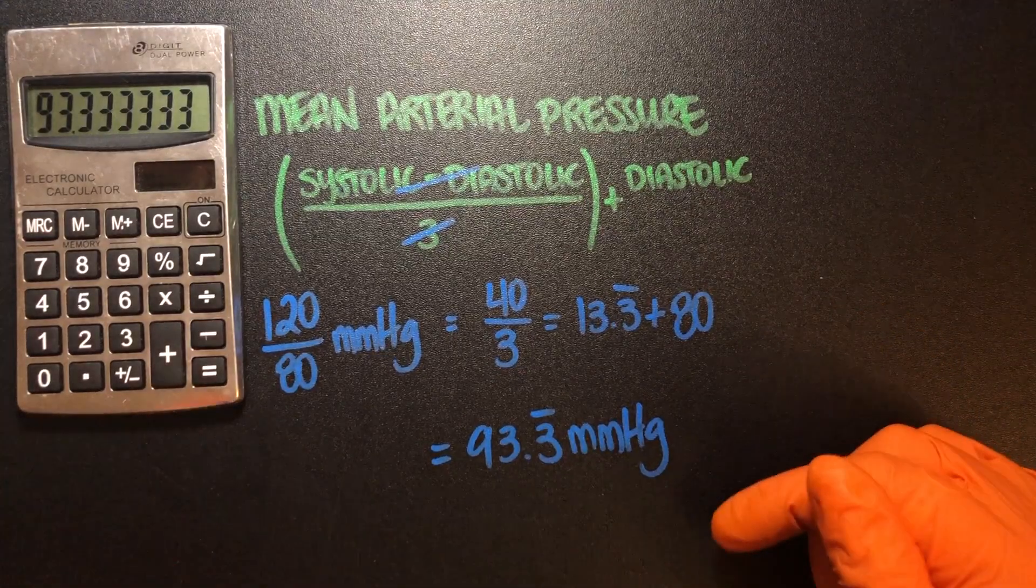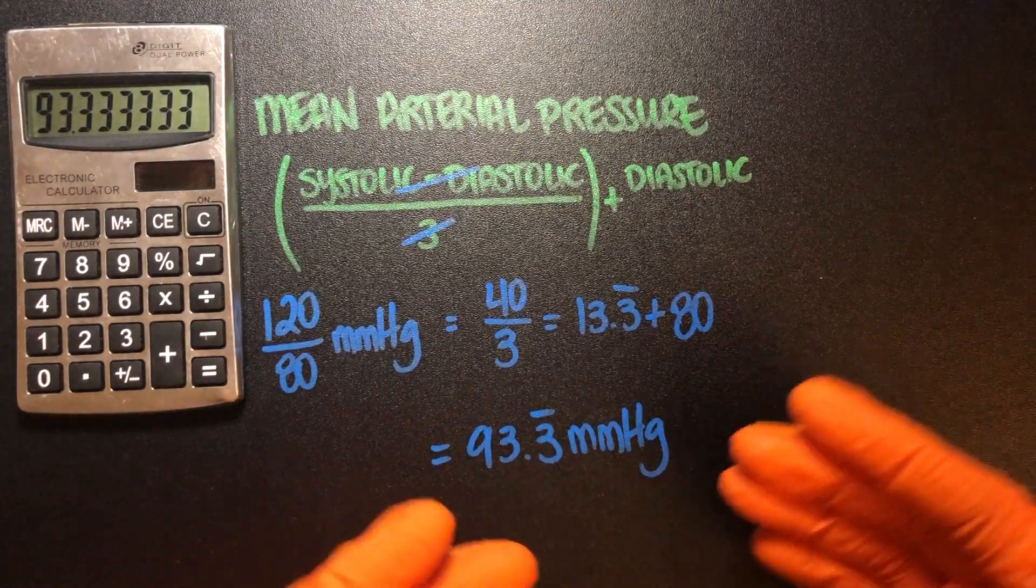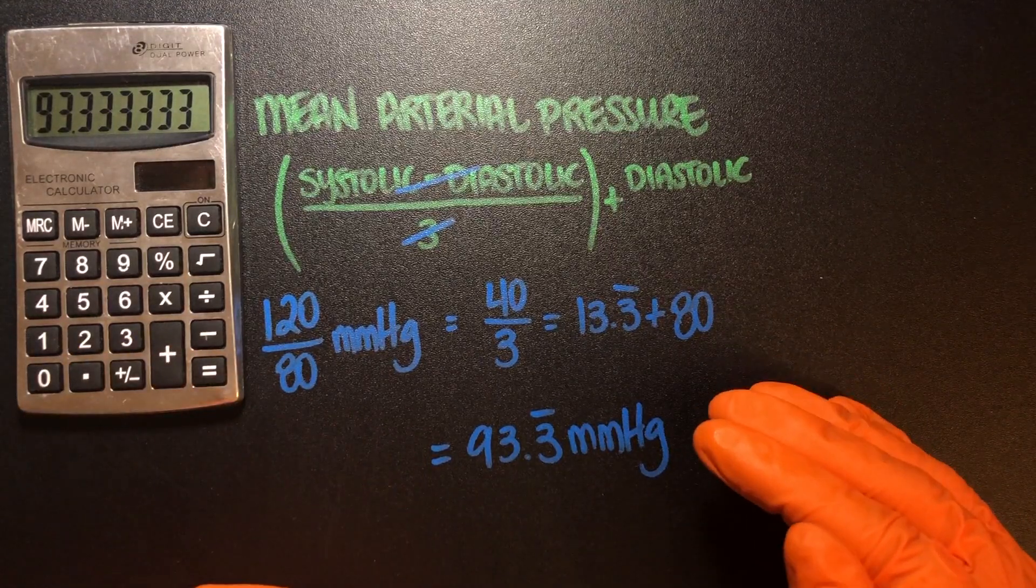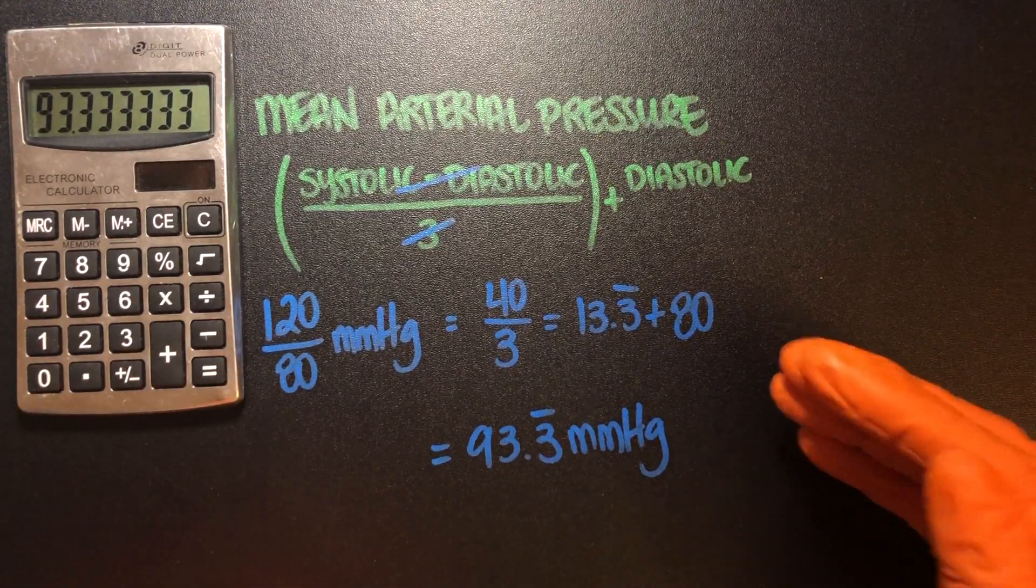A low MAP means that we don't really have good blood flow and that kind of makes sense because there's a lower pressure.